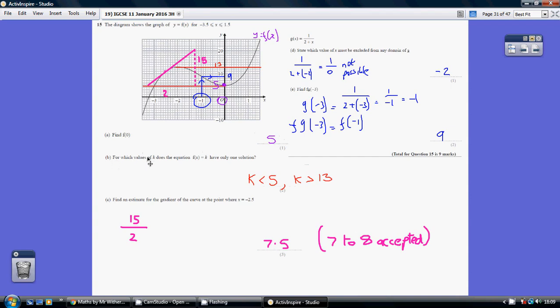For which values of k does f of x equal k have only one solution? So when would we only get one solution arising? We're now looking at the y values, and we can see between 5 and 13, if we take any readings, we're going to get 1, 2, 3 solutions. But the second we get beyond 13...